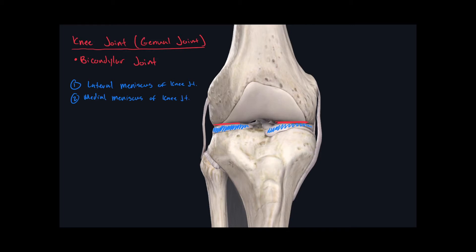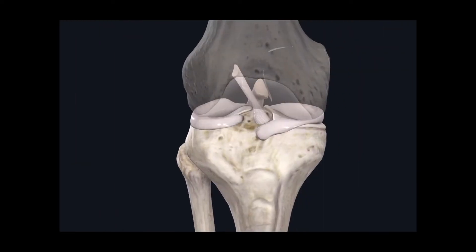There are two ligaments found within the articular capsule of the knee joint, meaning they are intracapsular ligaments. I've faded out the femur bone so we can see within the articular capsule. One ligament comes from the femur bone and inserts on the anterior intercondylar area of the tibia, and another comes from the femur bone and inserts into the posterior intercondylar area of the tibia. Because these ligaments insert in two different locations, we name them based on their location on the tibia. The one inserting on the anterior aspect is called the anterior cruciate ligament of the knee joint.